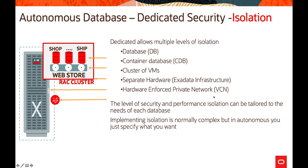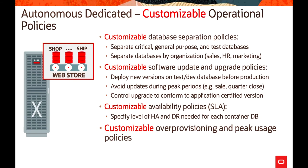The level of security and performance isolation can be tailored to the needs of each database. While isolation is normally complex, Autonomous provides the flexibility to implement it as needed. With customizable operational policies you can have a sophisticated private cloud within a public cloud — separate containers or CDBs allow you to segregate business areas by criticality. Test workloads can be isolated from production, getting updates and new versions first before production.